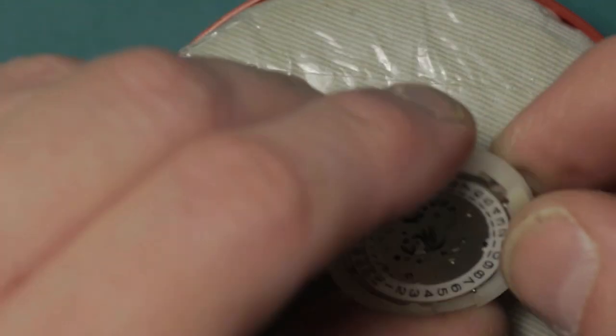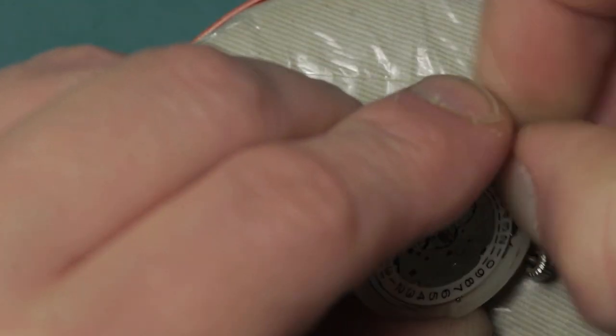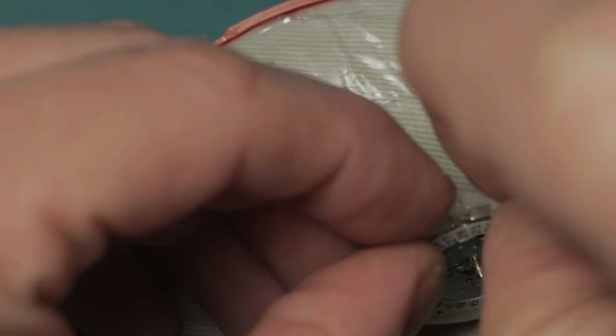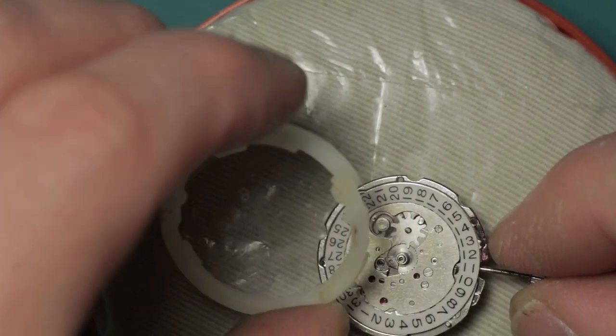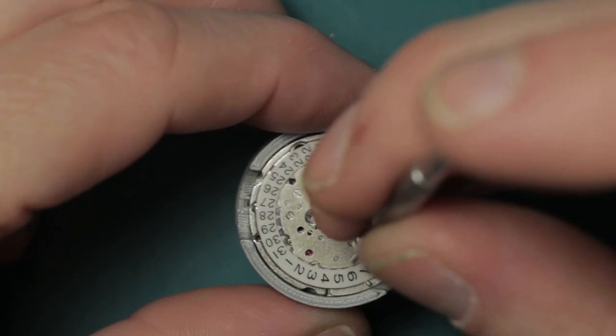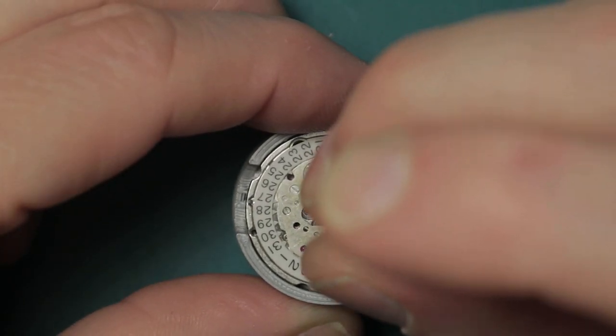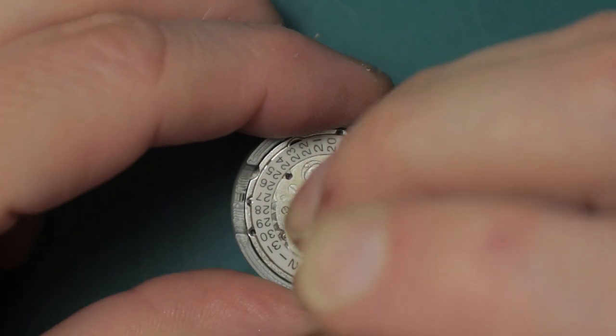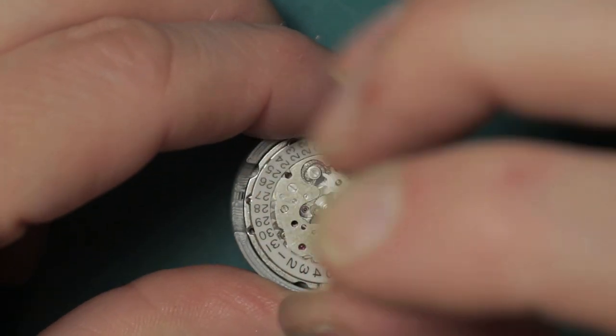Back to the dial side, the plastic movement ring snaps off. It clips quite securely in place, and again this is all very familiar to anybody who has worked on Citizen movements. The calendar works cover plate is secured by three small countersunk screws.